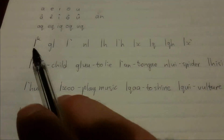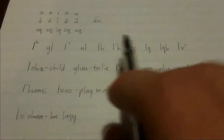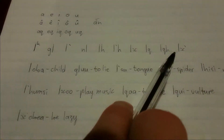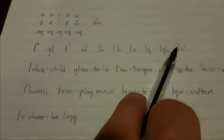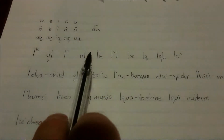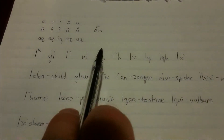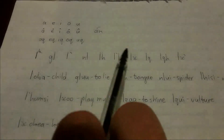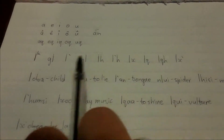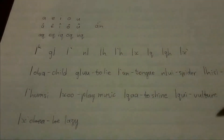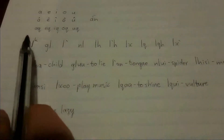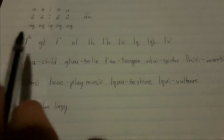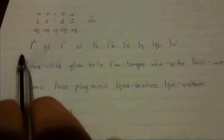Now we come to the click accompaniments. These are a very complex part of the language. For the purposes of this video, I've given the accompaniments for the dental click, although these are the same accompaniments for the lateral click, the alveolar click, and the palatal click. There are a few accompaniments for the bilabial click, but not all of these apply to it. I've given you some examples of how they are used, and I'll give you the names for each.